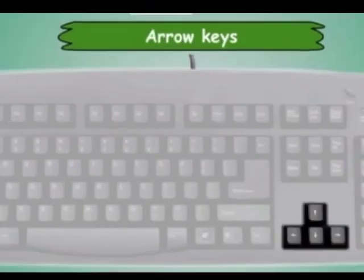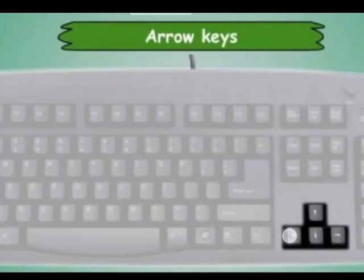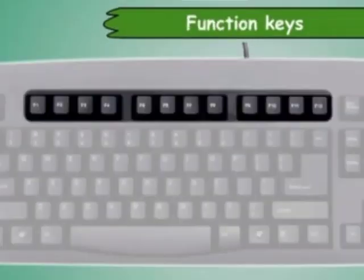Arrow keys: you can use the arrow keys to move up and down, left and right on the screen. Function keys: you can do special jobs using the function keys.